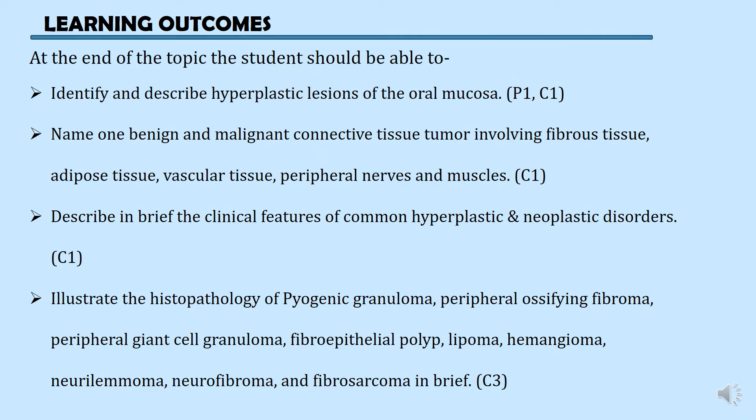The learning outcomes for this topic are as follows. At the end of the topic the student should be able to identify and describe hyperplastic lesions of the oral mucosa; name one benign connective tissue tumor involving fibrous tissue, adipose tissue, vascular tissue, peripheral nerves and muscles; and describe in brief the clinical features of common hyperplastic and neoplastic disorders.